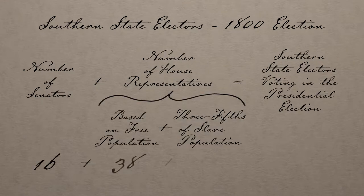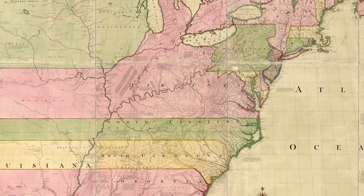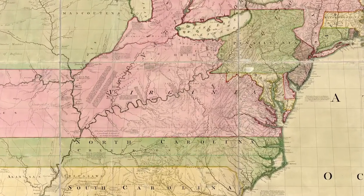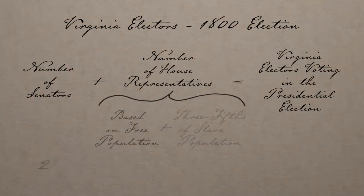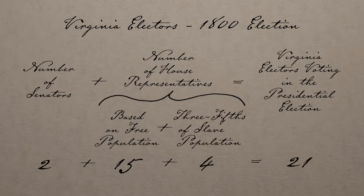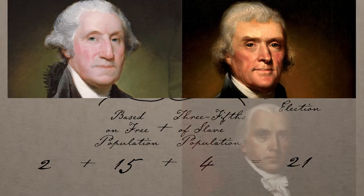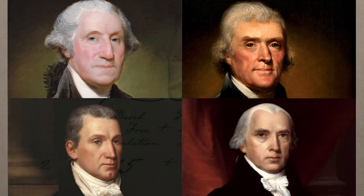With an electoral college, the South gets to count its slaves — it's getting extra credit for its slaves. And that's why the big winner in this system is, unsurprisingly, Virginia. It's a big state with a lot of slaves.